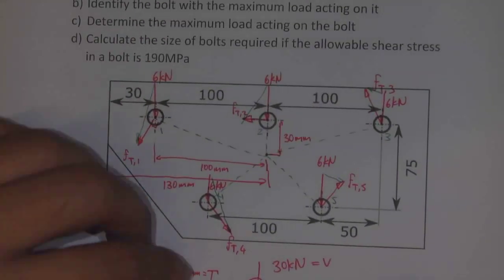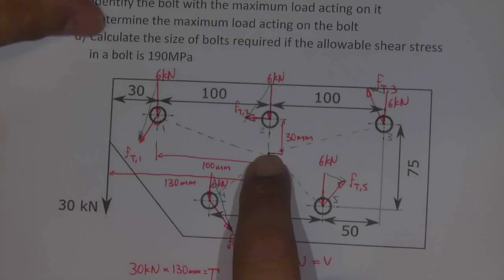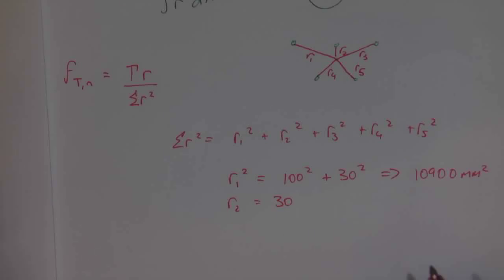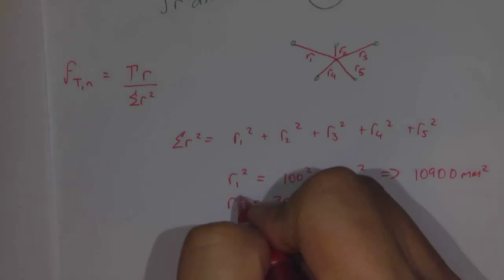We can do the same thing for number two. Number two is pretty straightforward. It's just this distance here, 30. That distance squared, and we'll get our value for R2 squared.